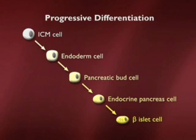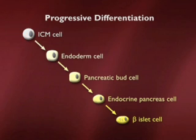Not every inner cell mass cell does that — some will become muscle and nerve — but this just shows the progression to one kind of differentiated cell. Because embryonic stem cells, which I abbreviate as ES cells, can do that, the ICM cell is replaced with an ES cell because it could become any part of the body.